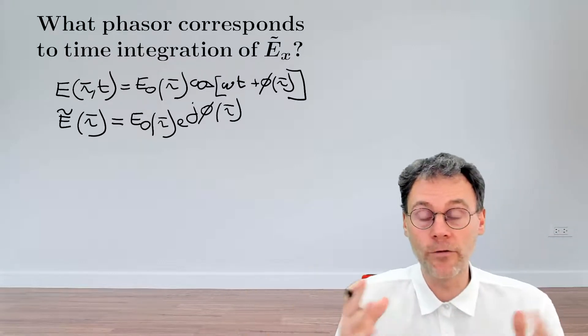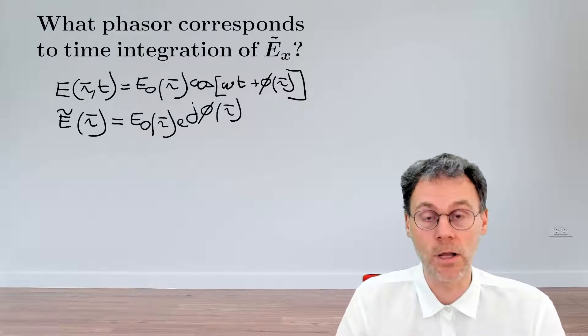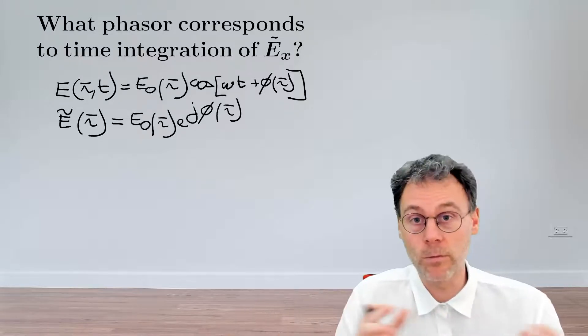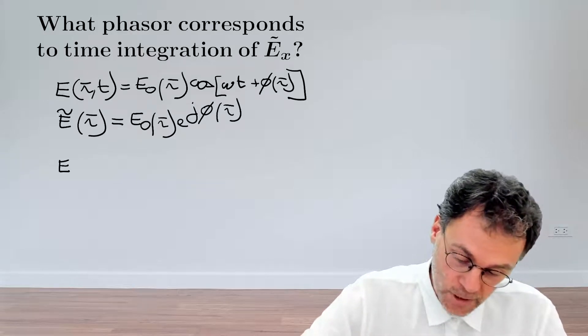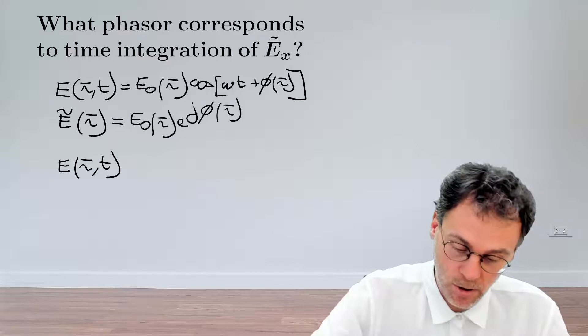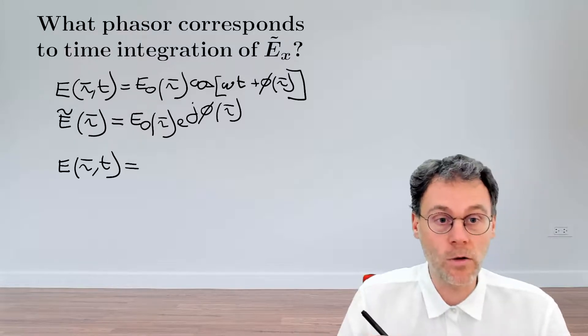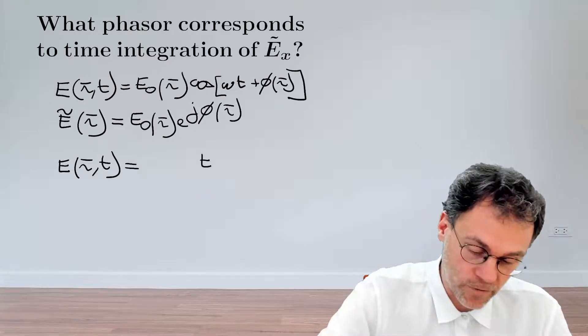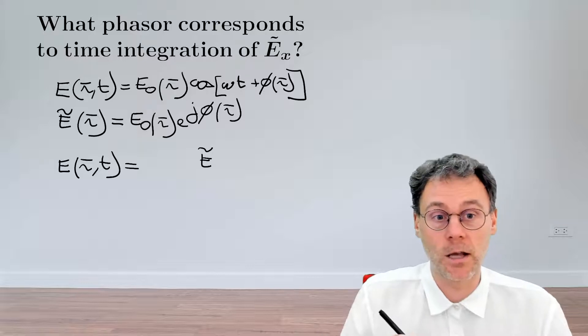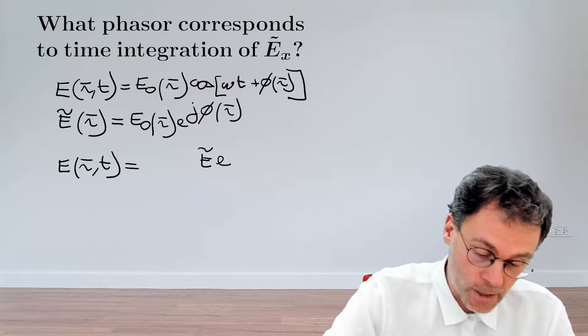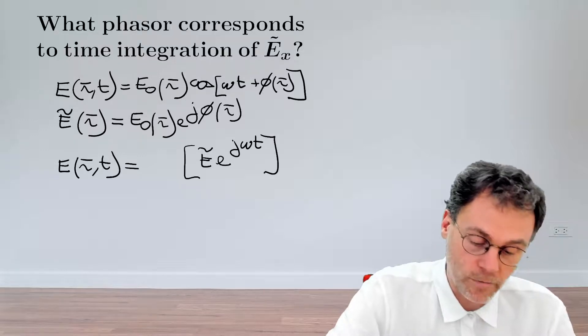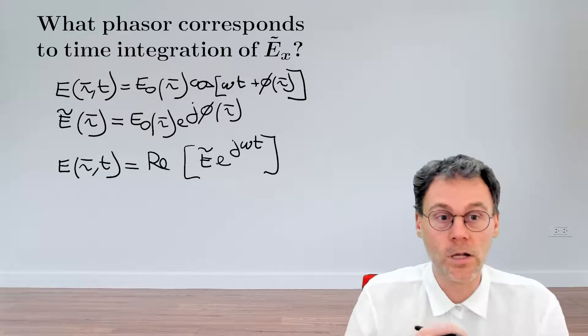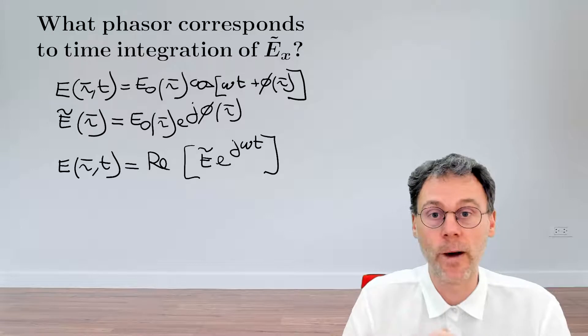So, now we have two different representations of this oscillation. How do we move back and forth between these two? Well, if we want to recover, for example, the explicit time dependence, E(R,t), the way we do that starting from the phasor is we just take that phasor, we multiply it by exponential j ω t, and then, of the result, we take the real value. So, this is how we move back and forth between the two.